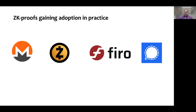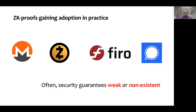Over the last few years, we have seen zero-knowledge proofs being implemented in real-world systems. However, often the security guarantees about these proof systems are very weak or non-existent. This might sound surprising to you, given that most of these proof systems have existing security analysis.